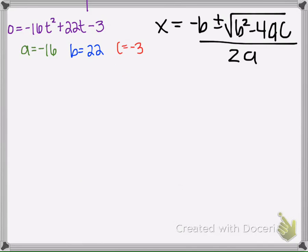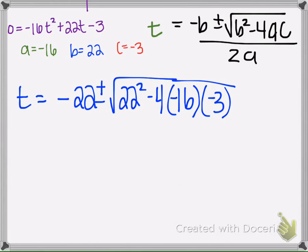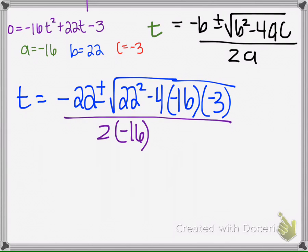The quadratic formula helps you find X — but in this case the equation has T instead of X, so this is going to tell us how long it takes for the ball to reach 10 feet. So I'm going to find T: negative B, plus or minus the square root of B squared minus 4AC, all divided by 2A.